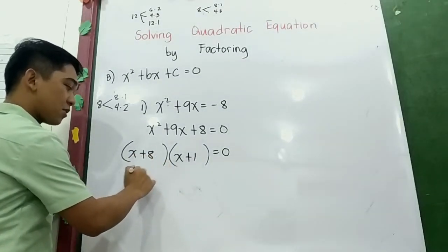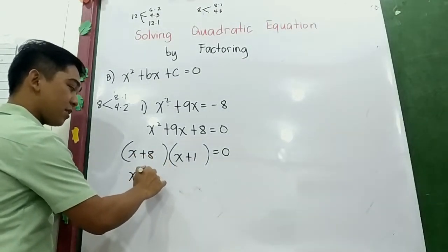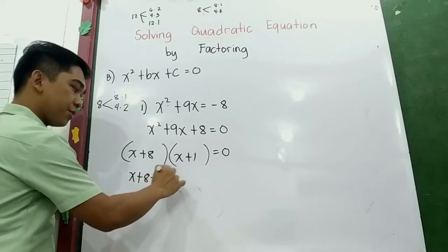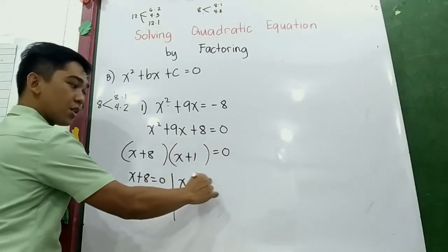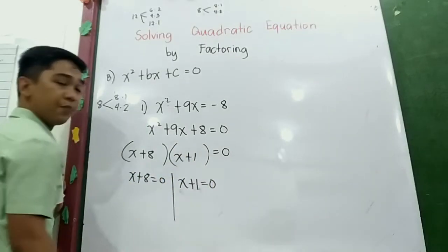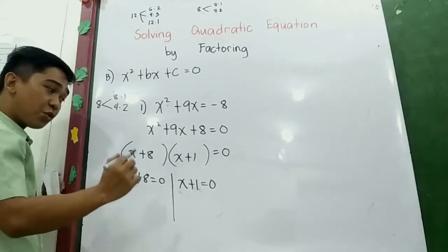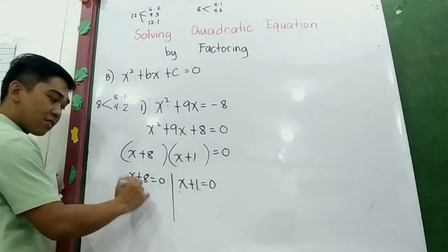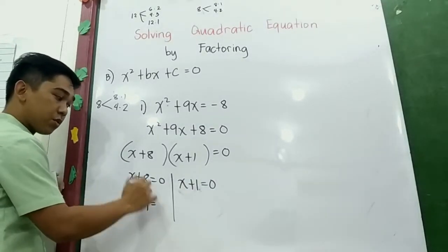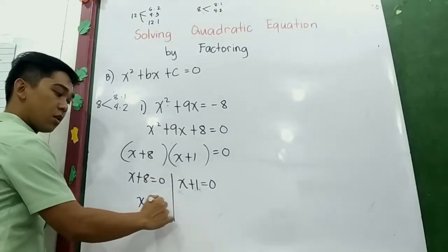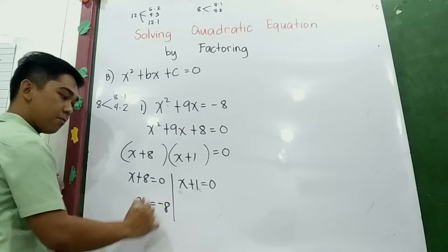So x + 8 = 0 gives x₁ = −8. And x + 1 = 0 gives x₂ = −1. We have two values for x.